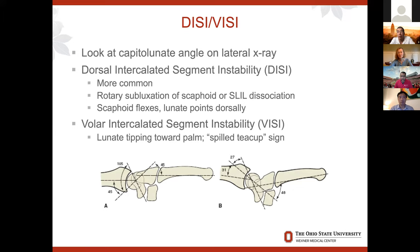The lunate is attached to your scaphoid radially and to your triquetrum ulnarly. The scaphoid likes to flex and the lunate likes to extend. So when you have a scapholunate injury, the lunate goes along with the triquetrum and extends, which gives you DISI. If you have a lunotriquetral injury, the lunate goes along with the scaphoid and flexes — that's where you get VISI, and you get that spilled teacup sign.